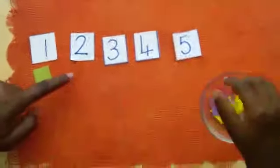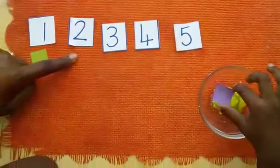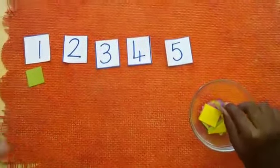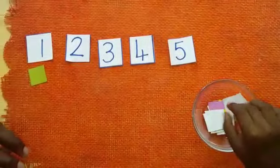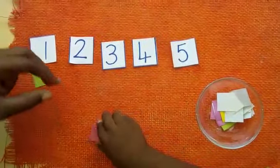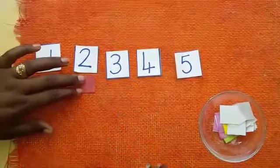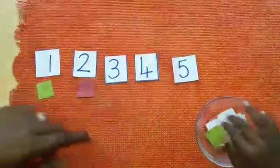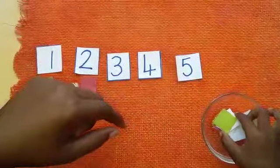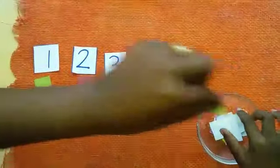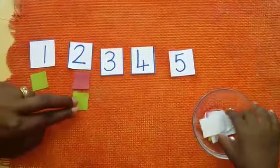Next number, what do we have here? 2. So we're going to put 2 counters. When you're introducing this activity to them, just let them repeat after you as they count the counters in. 1 and 2. There we go.